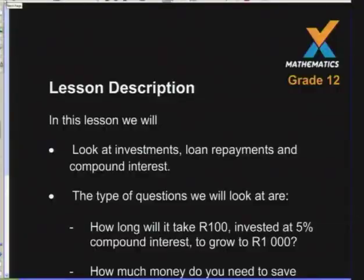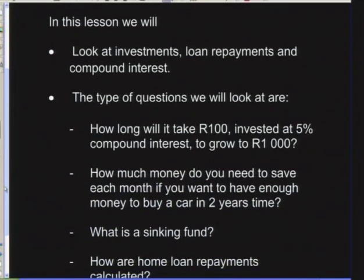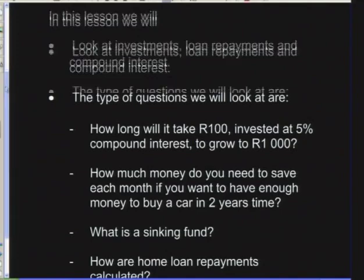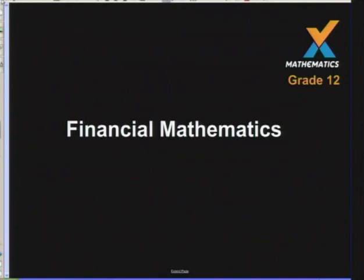To recap last week: we looked at how long it would take R100 invested at 5% compounded interest to grow to R1,000, and how much money to save to buy a car in two years. What we didn't look at is the sinking fund and how home loan repayments are calculated — that's what we're doing today.